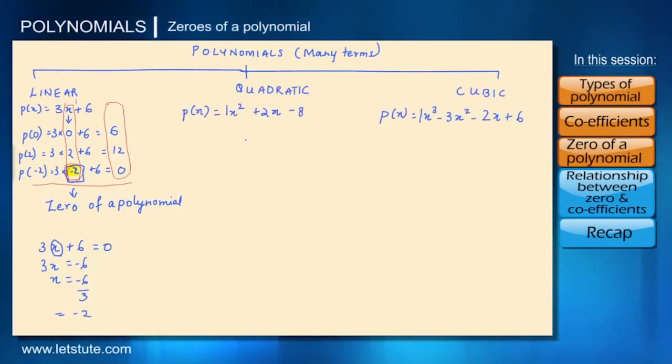In the same way we can find zeros for any polynomial by equating it with 0. Let's find zeros for this quadratic polynomial.